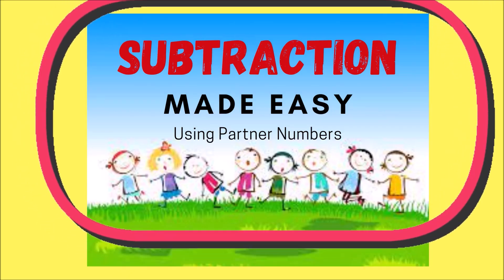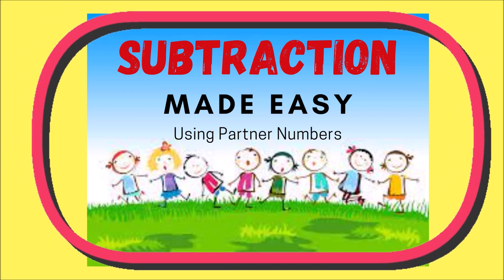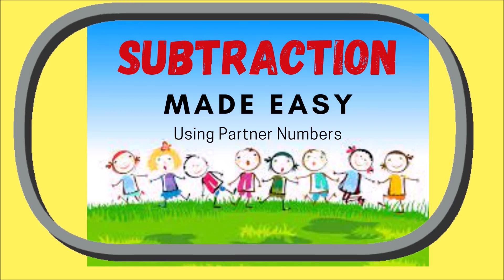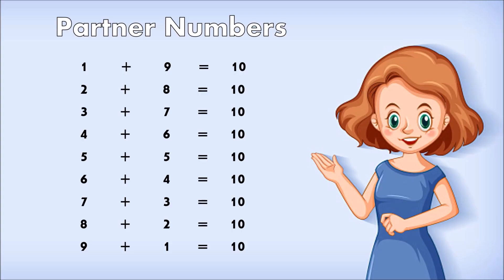Good day kids. Today I will be teaching you how to subtract using partner numbers. First, let me show you what these partner numbers are. These are single digit numbers that when you add them, the sum is 10. For example, the partner of 1 is 9, the partner of 2 is 8, the partner of 3 is 7, and so on.